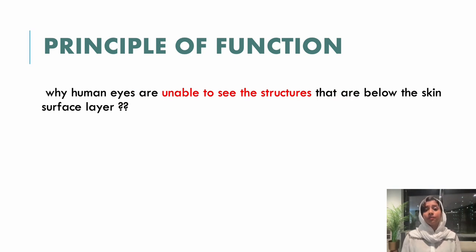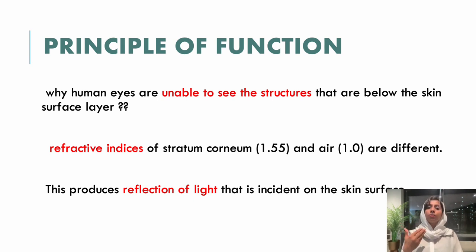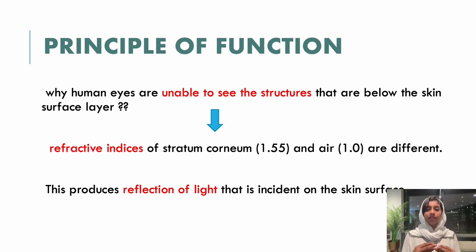Now, what is the principle of function? The question is why is the human eye unable to see the structures that are below the skin surface layer. The answer is that the refractive index of the stratum corneum and the air are different. This produces a reflection of the light incident on the skin surface, due to which we are unable to see the structures beneath it. What the dermoscope does is basically prevent this reflection, helping us to see those structures.